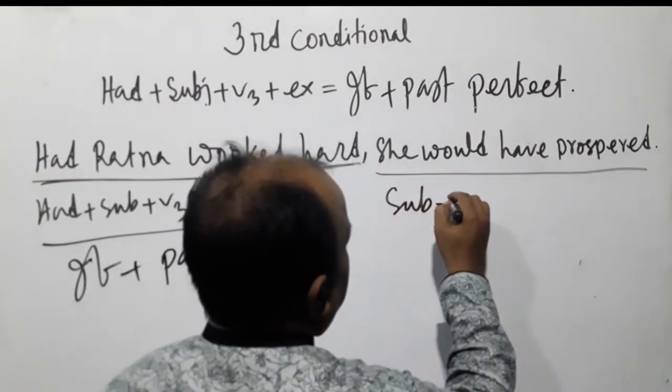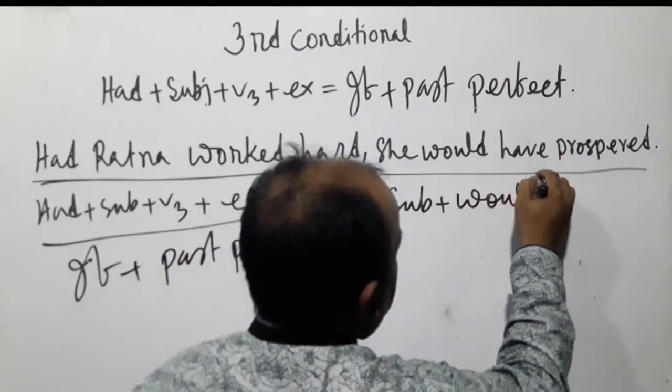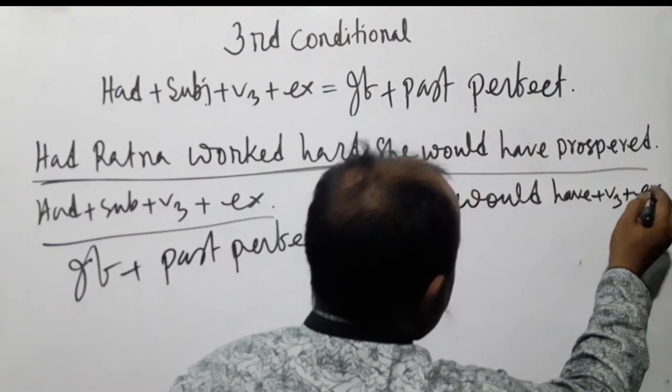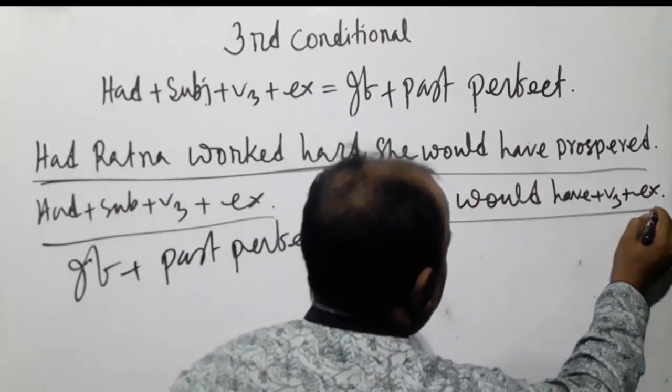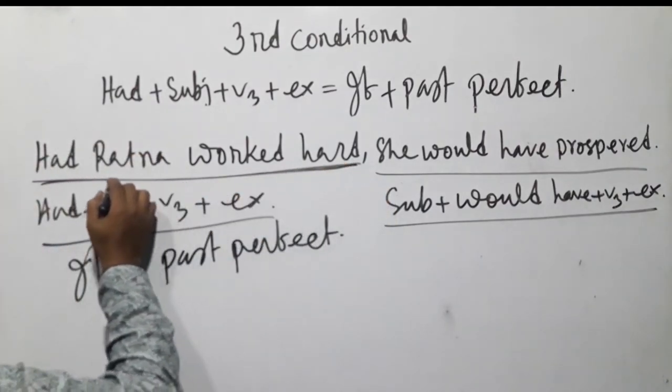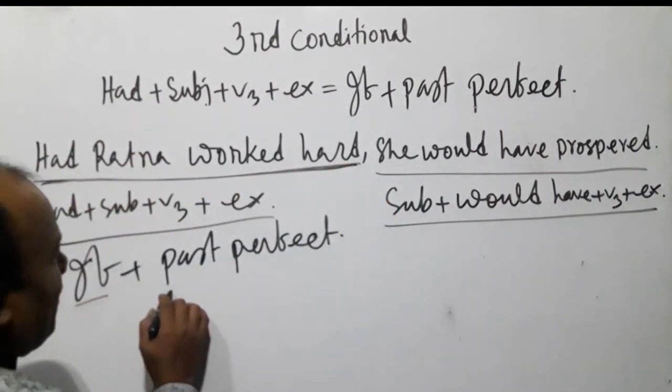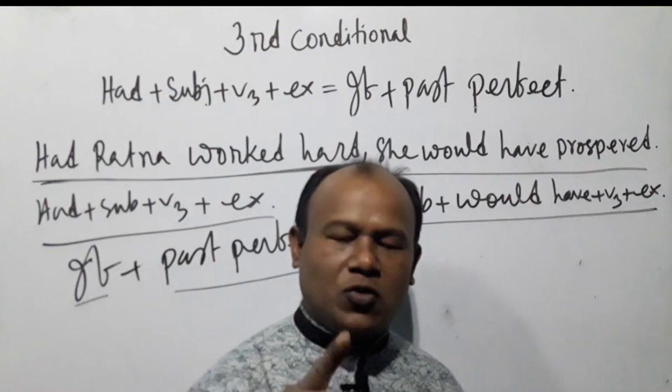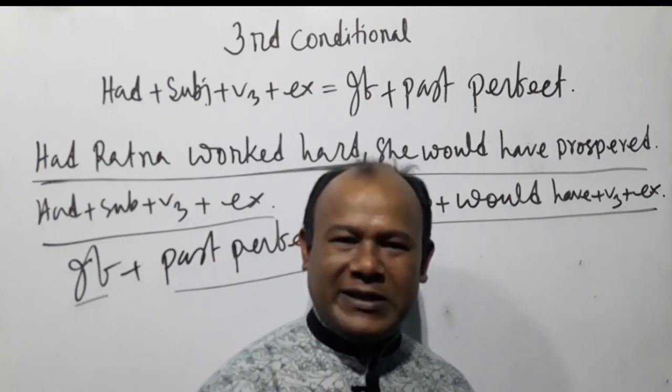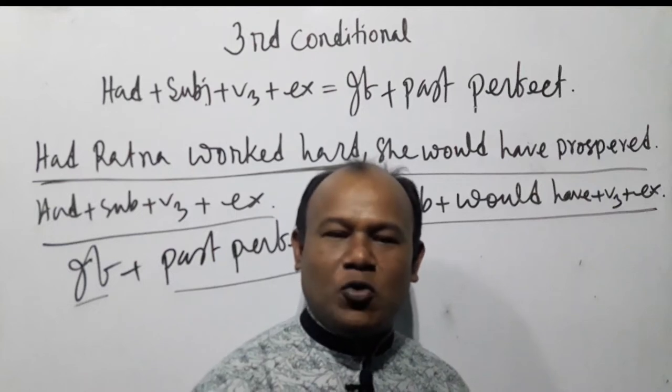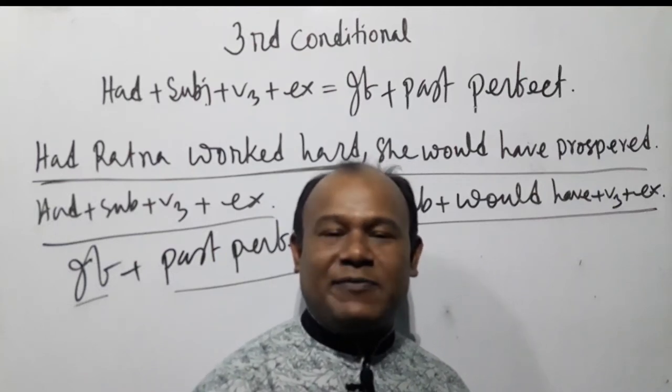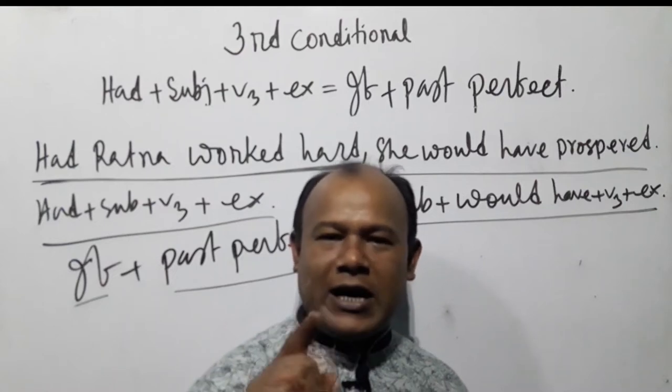Subject + would have + v3 + extension. That means in the sentence, the first part is 'had + subject + v3 + extension,' which means 'if + past perfect' tense.